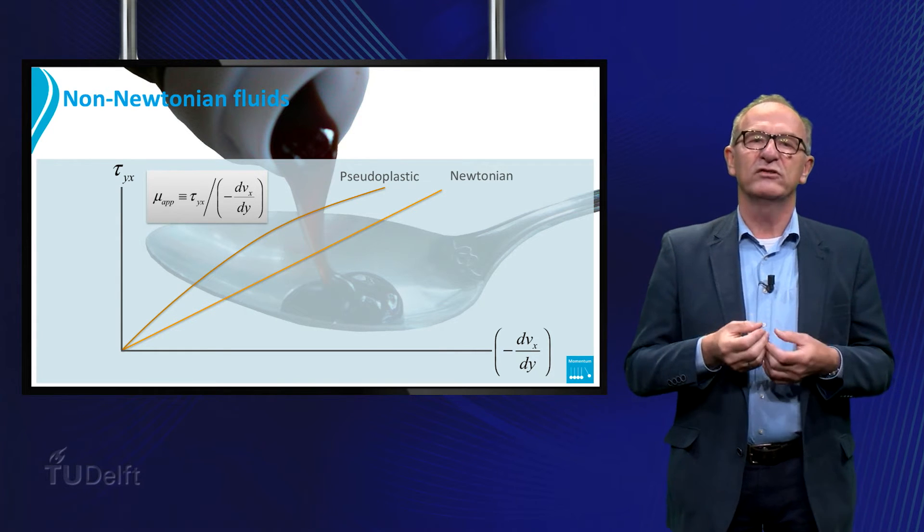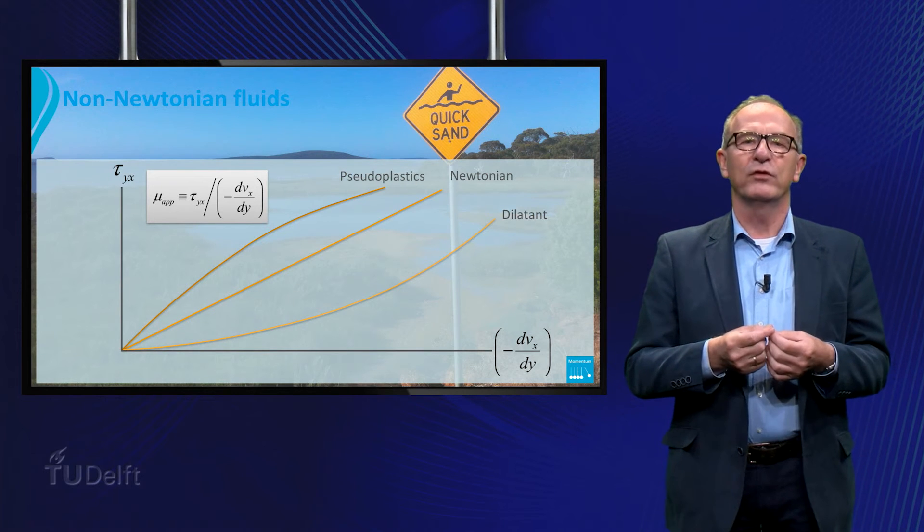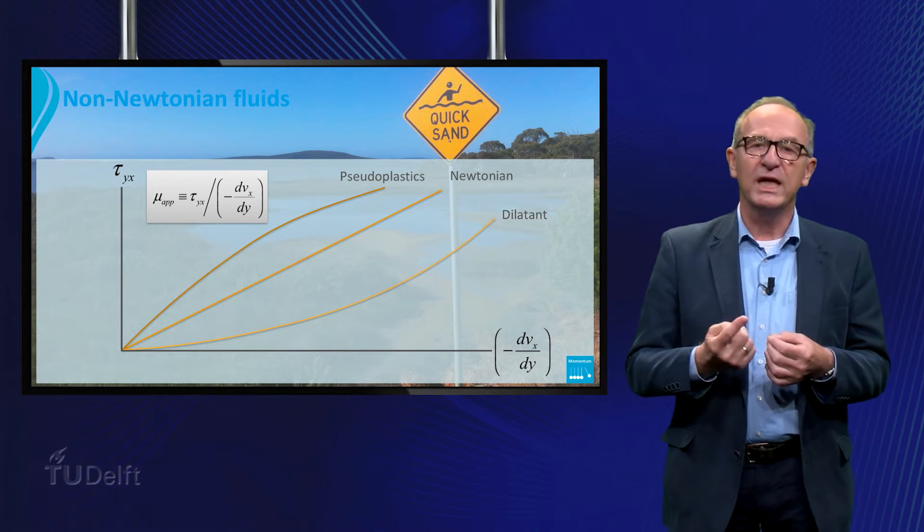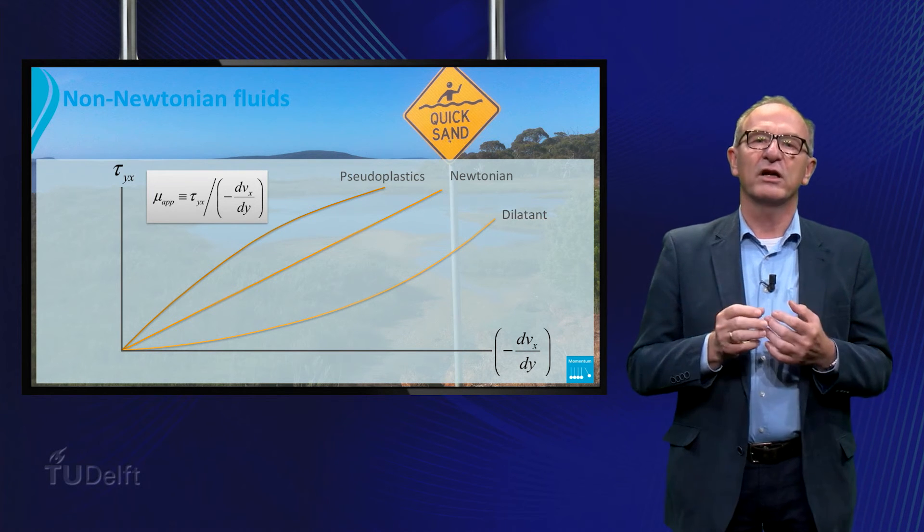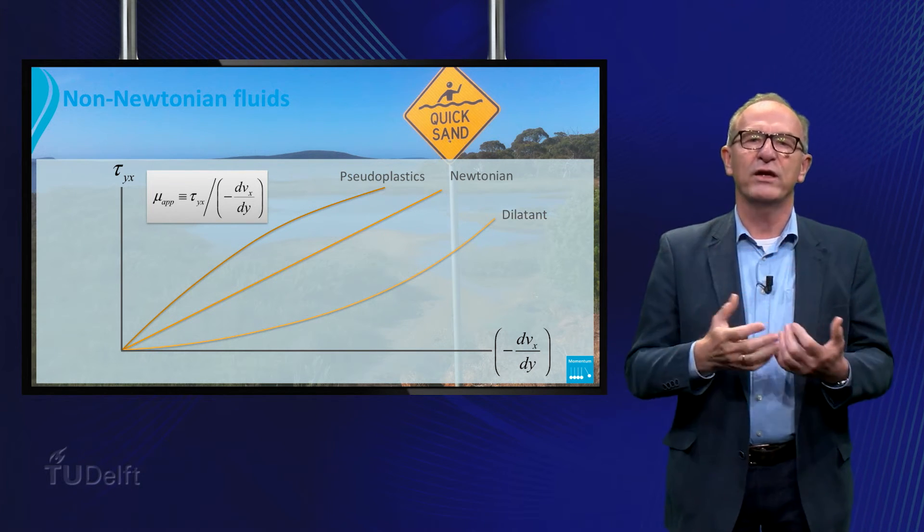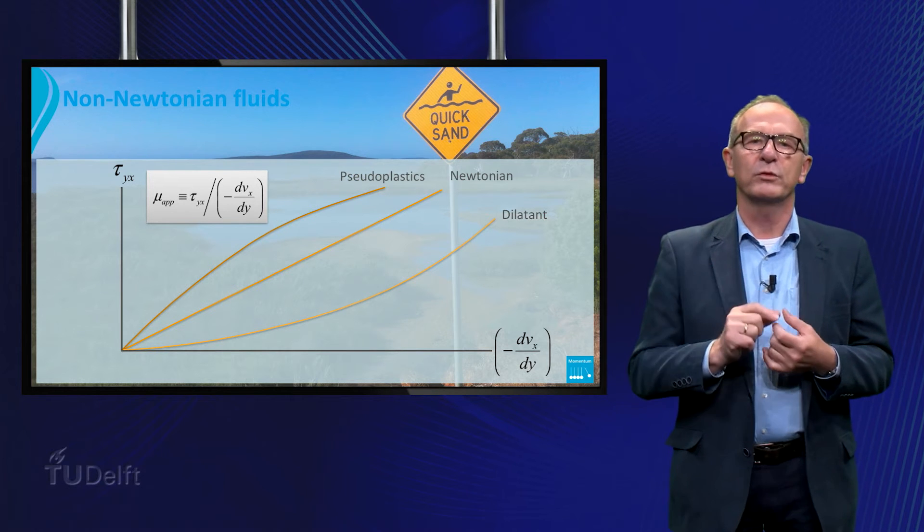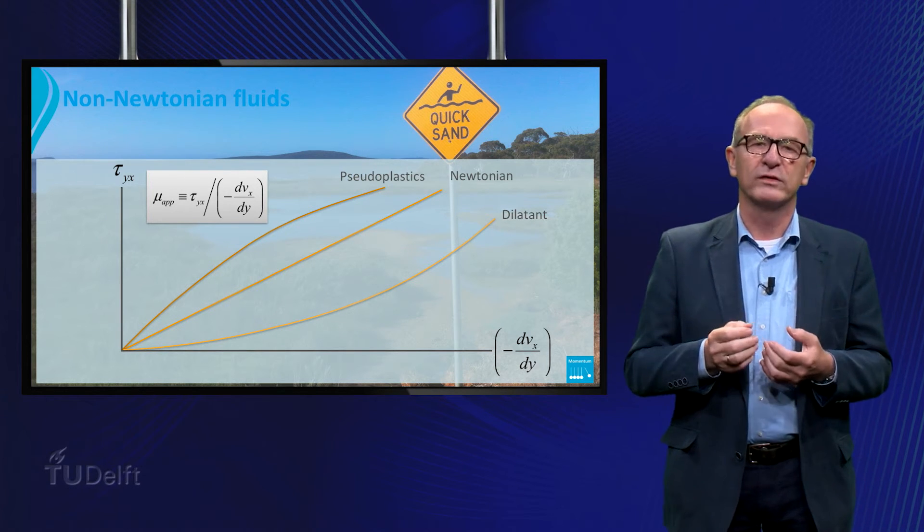Further we can distinguish the dilatant or shear-thickening fluids where the apparent viscosity increases if the shear stress increases. Dilatants are typically observed in fluids with high concentrations of small solid particles suspended in a liquid, for example quicksand.